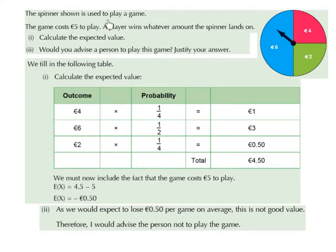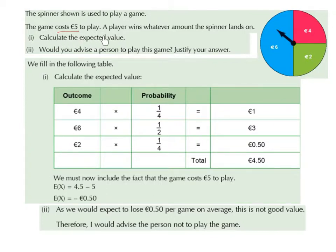The spinner shown is used to play a game. The game costs five euro to play. A player wins whatever amount the spinner lands on — they can win six euro, four euro, or two euro. Remember, it costs five euro to play. Calculate the expected value and advise whether a person should play this game.